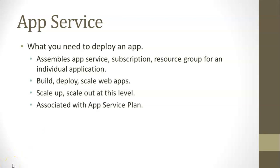Finally, we put this all together in an app service. App service is what we need to deploy our app — we assemble our app service, subscription, and resource group, putting it all together for one application. The app service is how we can build and deploy our web applications and view our web applications. We can scale up and scale out — either adding more resource to an existing machine or adding more machines. And we know that the app service is tightly coupled with an app service plan.